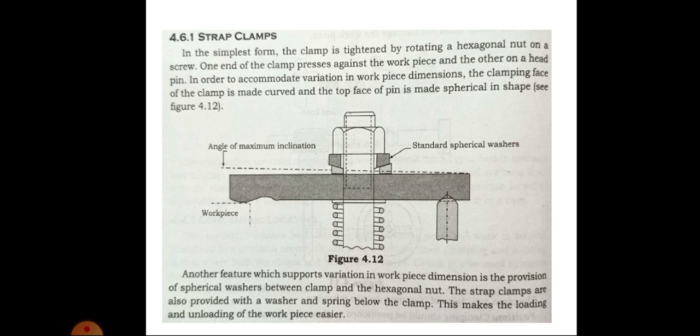Another feature which supports variation in workpiece dimension is the provision of spherical washers between the clamp and the hexagonal nut. Strap clamps are also provided with a washer and spring below the clamp. This makes the loading and unloading of the workpiece easier.